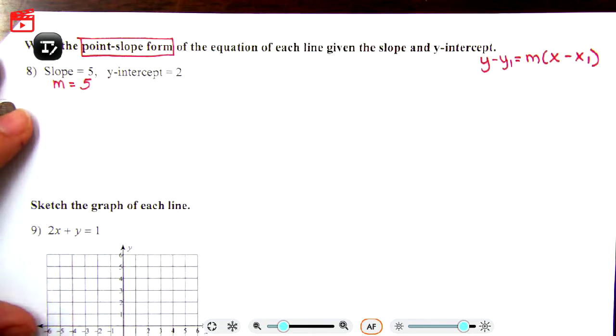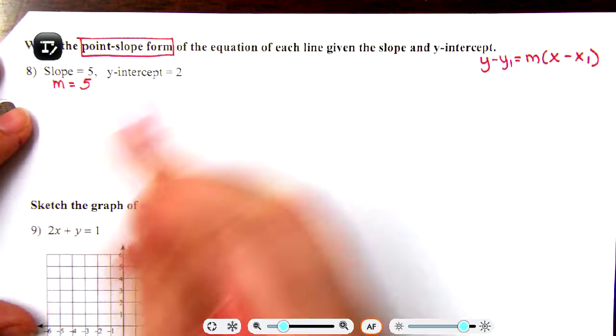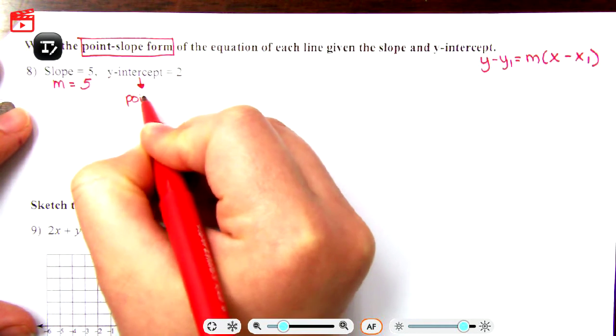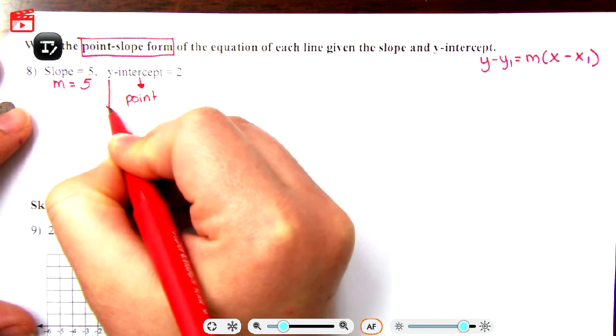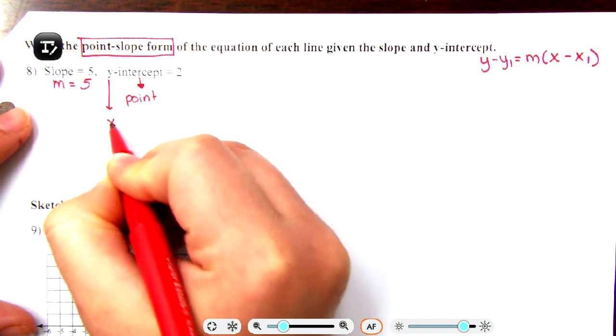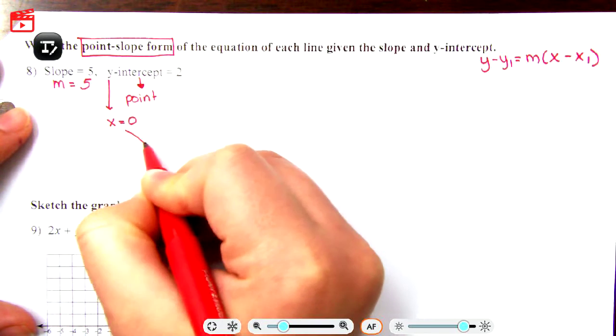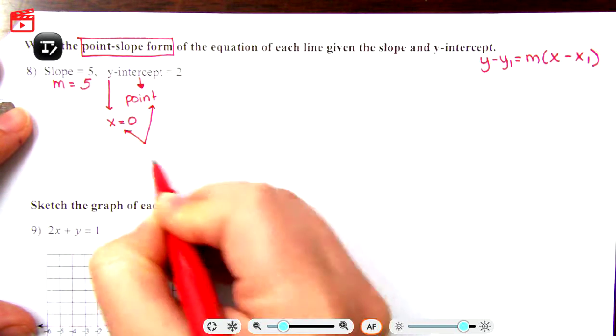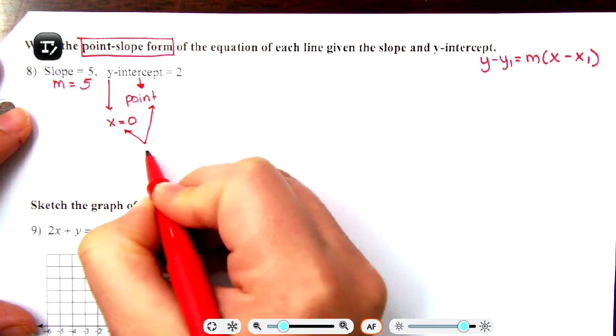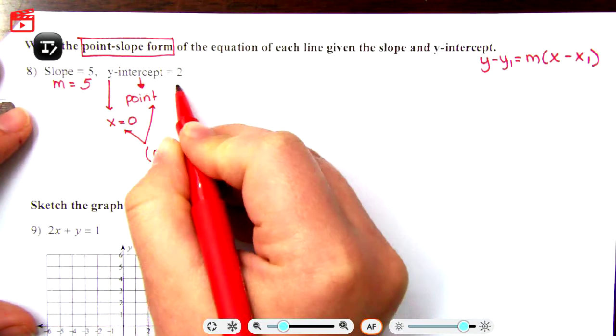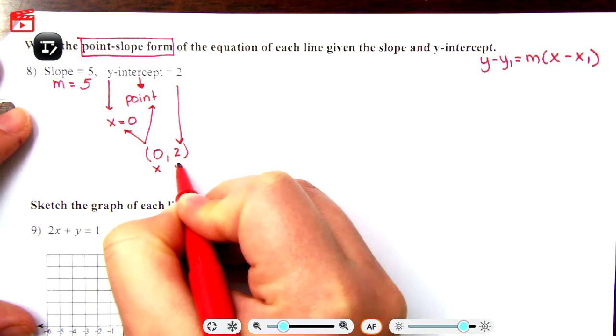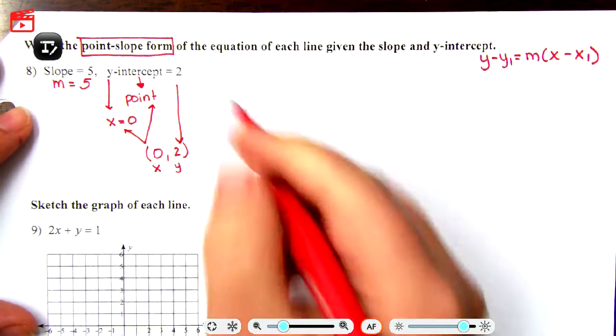Y-intercept - remember when we were talking about earlier, what does it mean to be an intercept? Well, an intercept is a point. Specifically, a y-intercept is where x is equal to zero. So this point with y-intercept being two is x is zero, y is two.